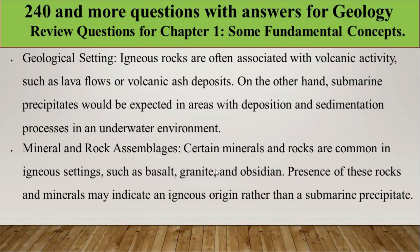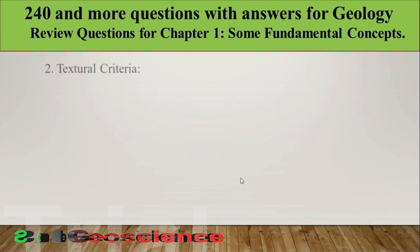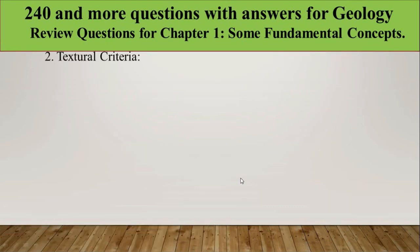Another field criterion under geographical association is mineral and rock assemblage. Certain minerals and rocks are commonly found in igneous settings, such as basalt, granite, and olivine. The presence of these rocks and minerals may indicate an igneous origin rather than a submarine precipitate origin.